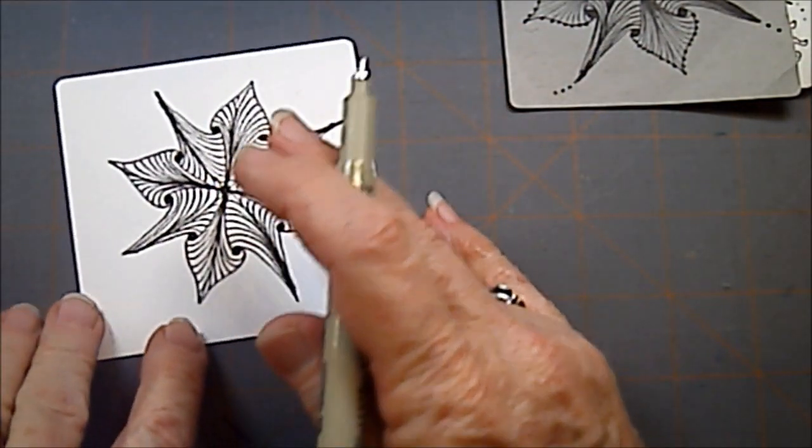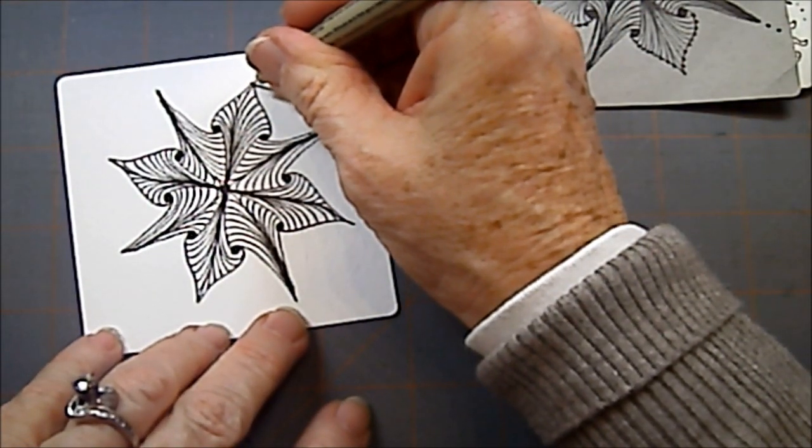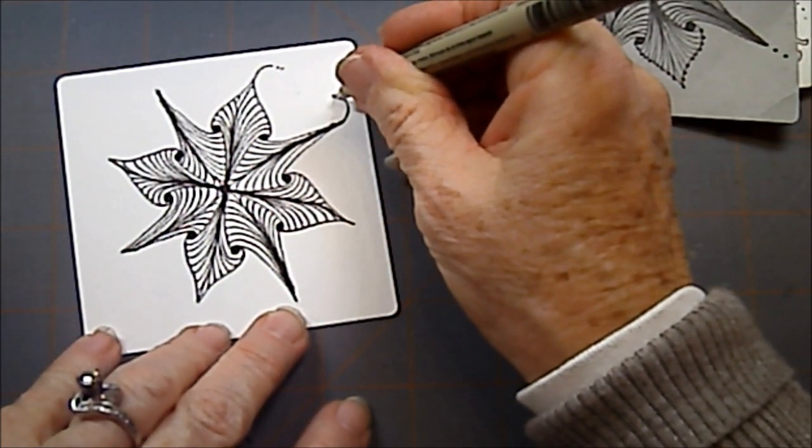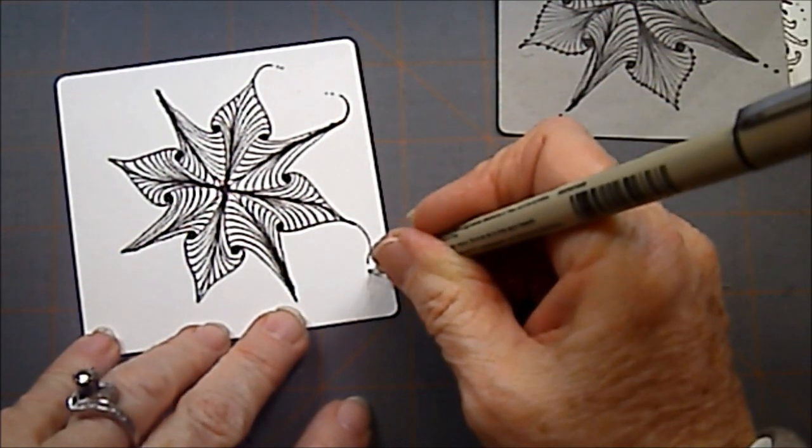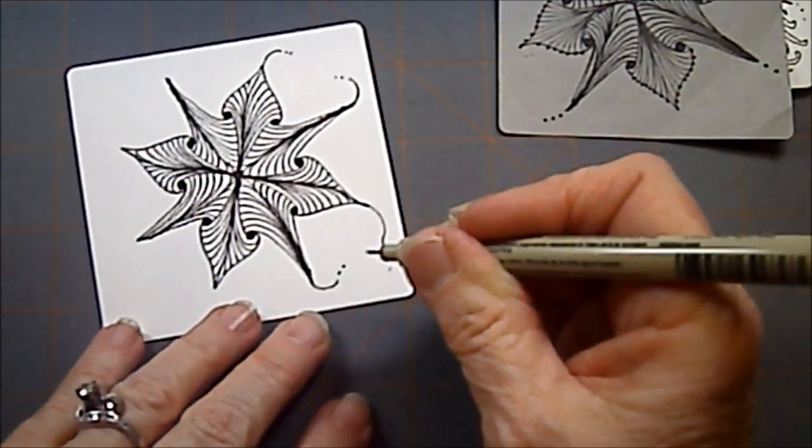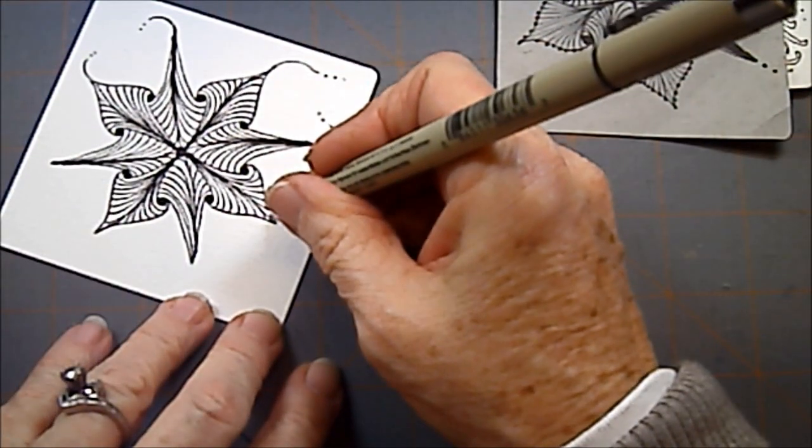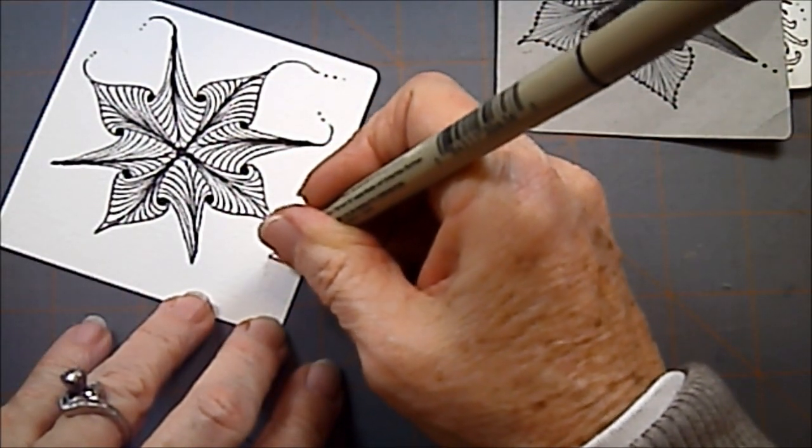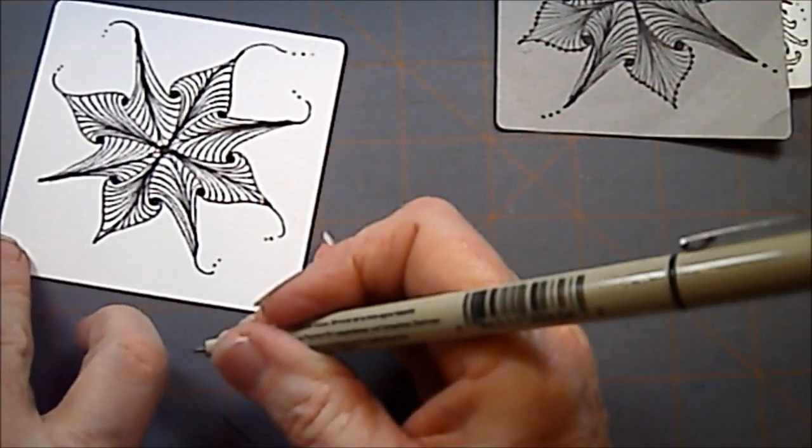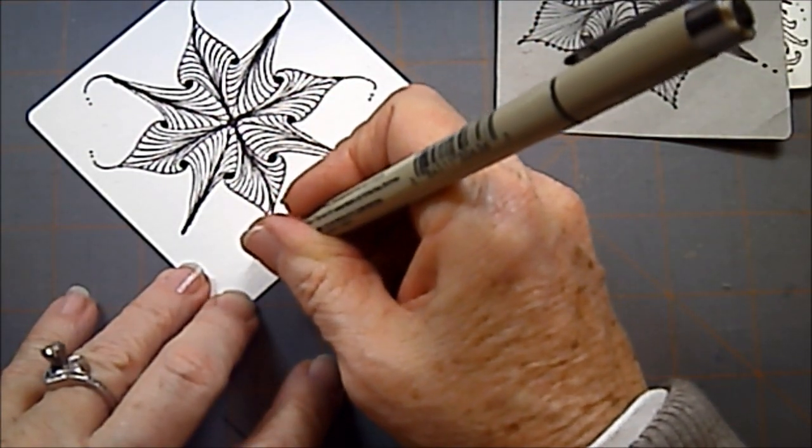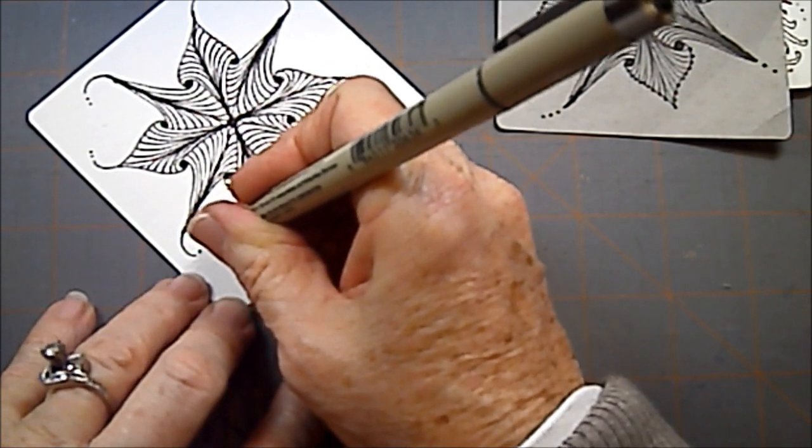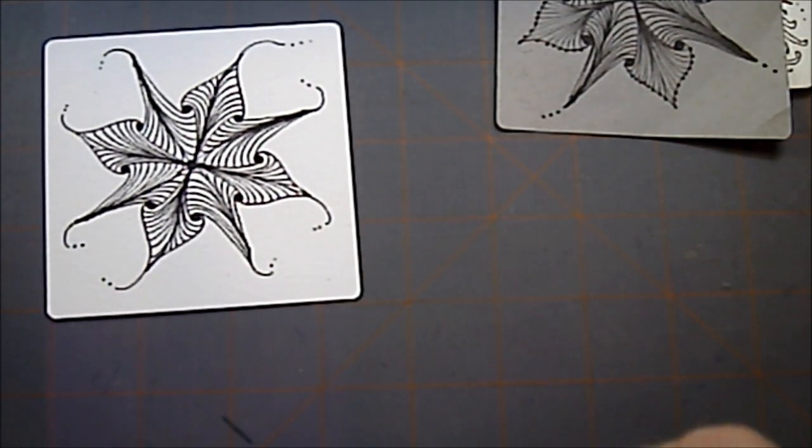And there we have Stella. Now, I like to give Stella a little bit of movement, so I'll draw a line out here. This gives a little movement to a stationary Stella.